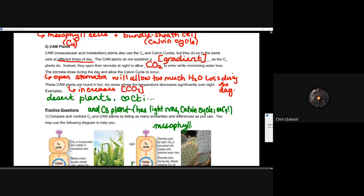These CAM plants are found in hot dry areas where the temperature decreases significantly overnight. You think about deserts, specifically in parts of Africa, in parts of sub-Saharan Asia, in parts of northern East Asia. CAM plants exist because the temperature drops significantly in the night. Also in places like Arizona desert, as well as the Nevada desert in the United States, because it really wants to try to increase that CO2 uptake at night, and then go through the Calvin cycle during the day. Desert plants, cacti, and C3 plants have a light reaction Calvin cycle, but no C4. That's just the final point.